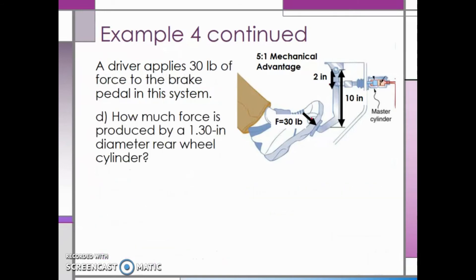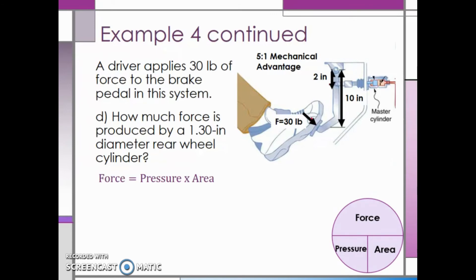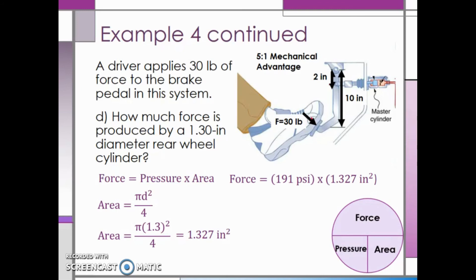Last, we want to find how much force is produced by a 1.30 inch diameter rear wheel cylinder. Since we are finding force, force equals pressure multiplied by area. We need to calculate the area: pi multiplied by the diameter squared divided by 4. Substituting in 1.3 inches as our diameter, we get an area of 1.327 square inches. Taking the system pressure of 191 psi from the previous part and multiplying by 1.327 square inches, the force produced by the 1.3 inch diameter rear wheel cylinder is 253 pounds.